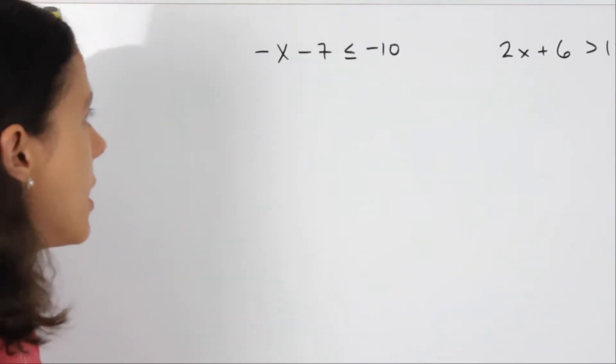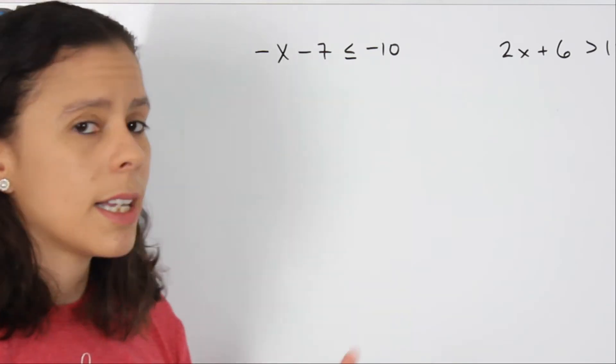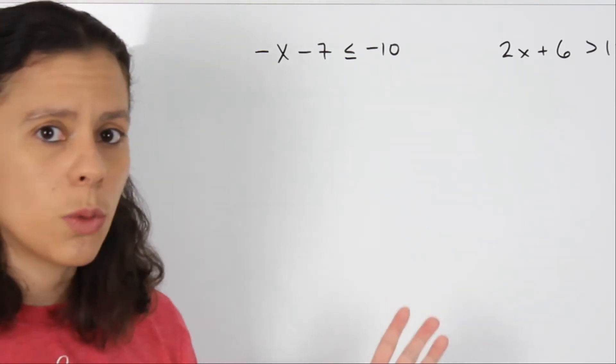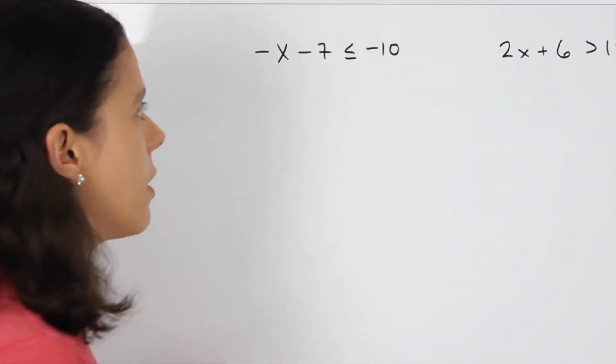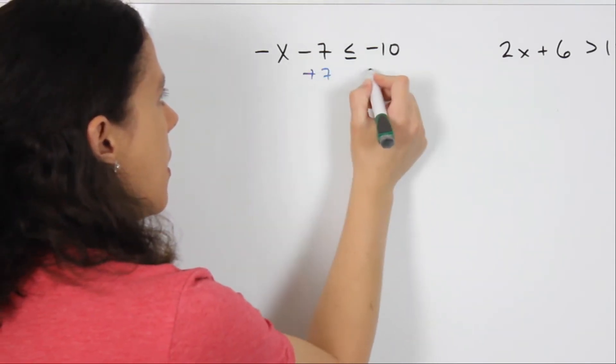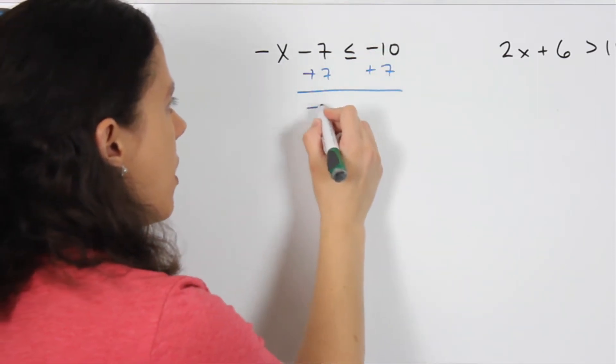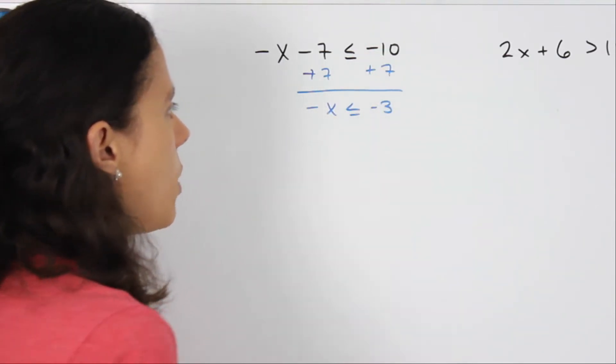So the first one is -x - 7 is less than or equal to -10. Well, the first thing I would do if this was an equation is that I would add 7 on both sides. That's going to give me negative 3. Negative x is less than or equal to negative 3.